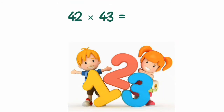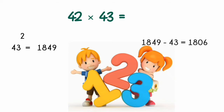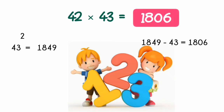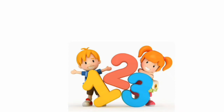In this example, 42 multiplied by 43, the largest number, or we can say the second number, is 43. We have to square the number and subtract 43 from it, and we get the answer which is 1806.